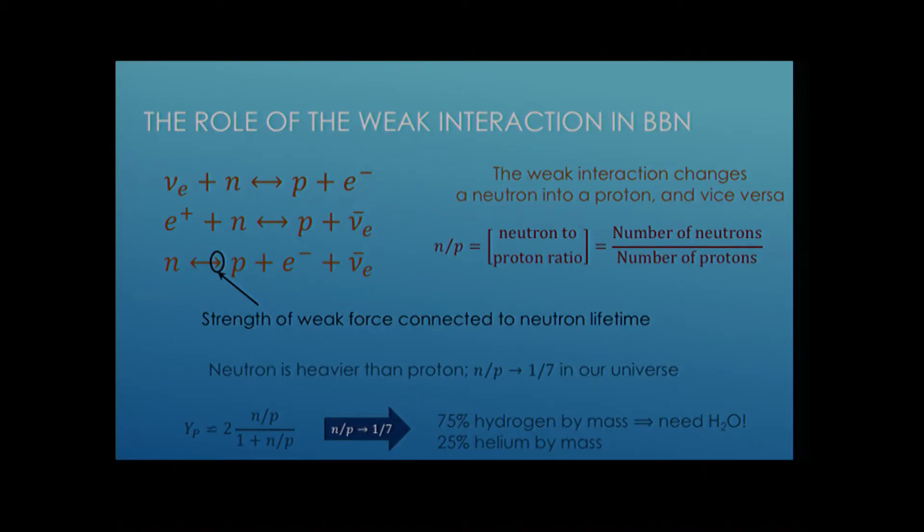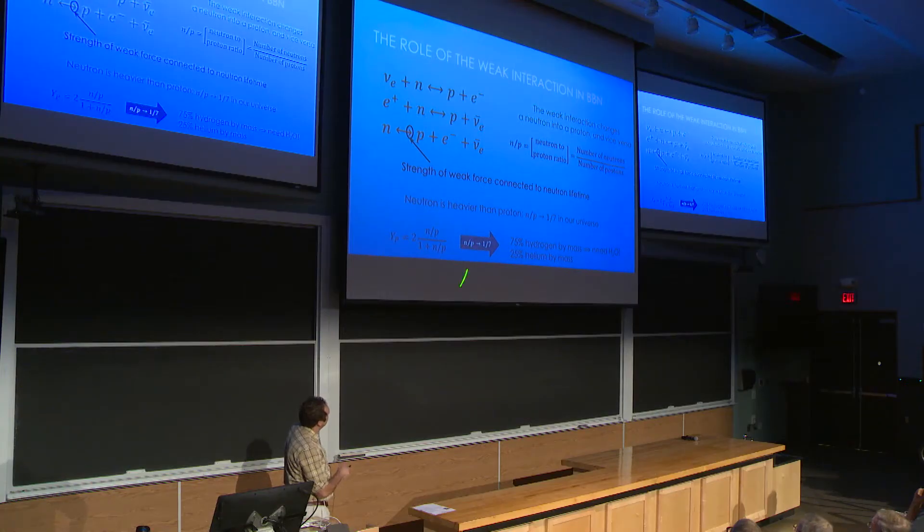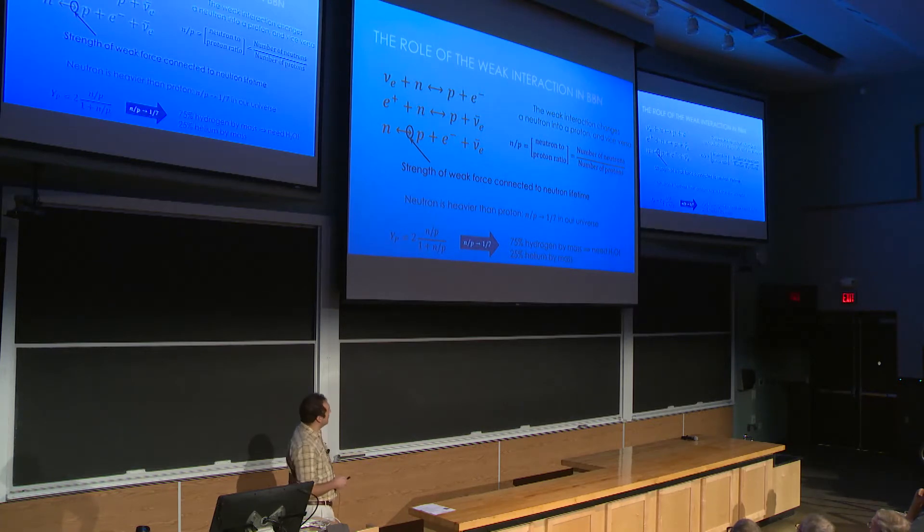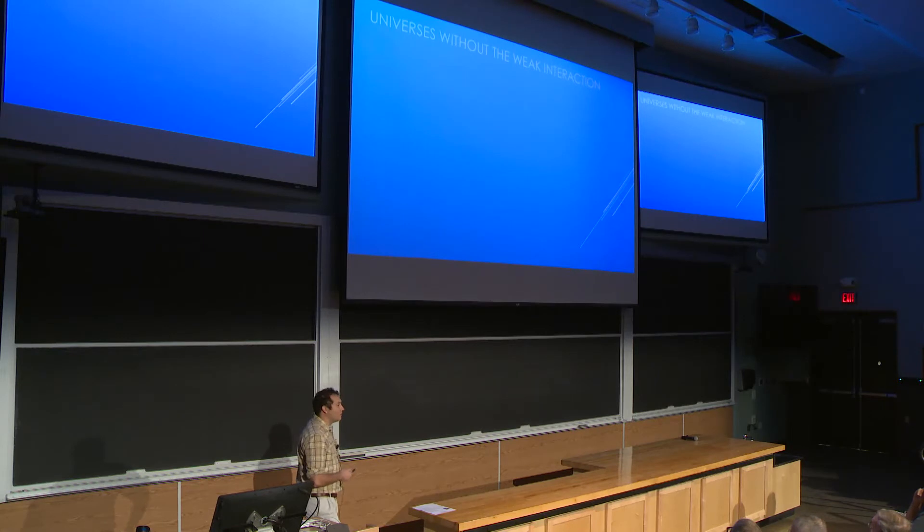So now that we have an idea of what the abundances are, let's talk about the role of the weak interaction in BBN. So the weak interaction converts neutrons into protons and vice versa. So these six reactions right here. And from this, we can determine the neutron to proton ratio. And this is the number of neutrons to the number of protons, and that's important for nucleosynthesis. We normalize the strength of the weak force by using the neutron lifetime, which is this forward reaction here, a free neutron decaying into a proton, electron, and an anti-neutrino.